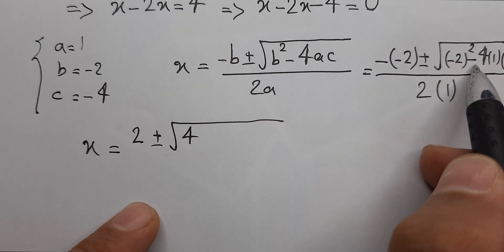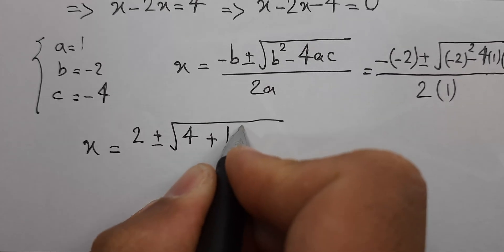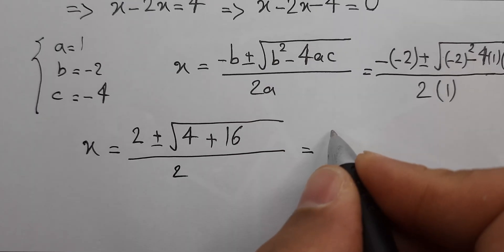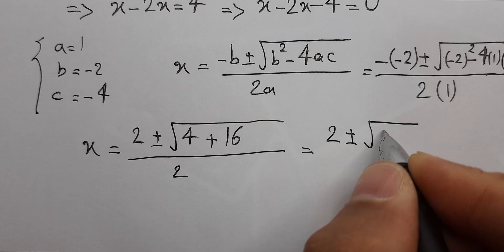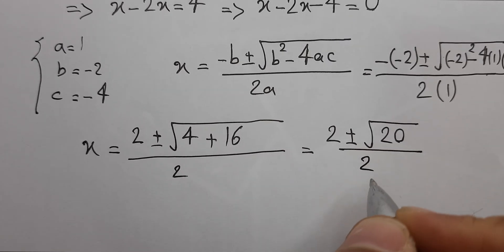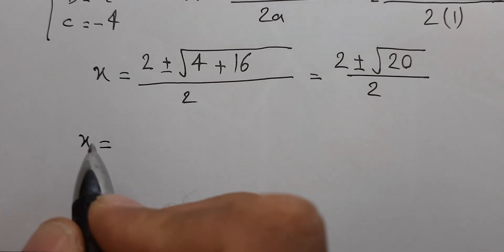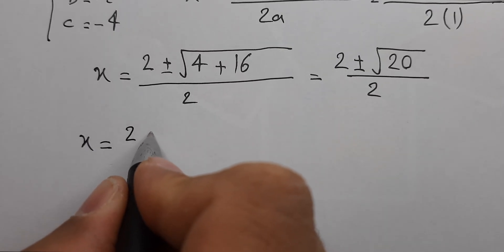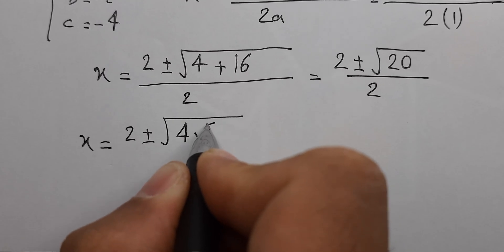That gives us: 4 minus 4 times 1 times negative 4 is plus 16, over 2. This is 2 plus or minus square root of 20, over 2.